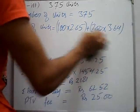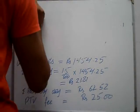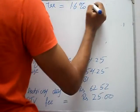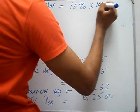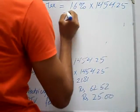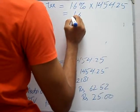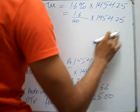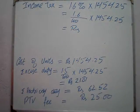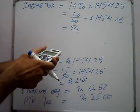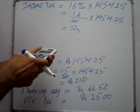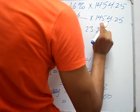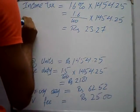Ab find karenge income tax. Income tax = 1.6% of cost price. Cost price kya hai — 1454.25. So 1.6 divided by 100 multiplied by 1454.25 gives Rs 23.27. Yeh hai income tax.